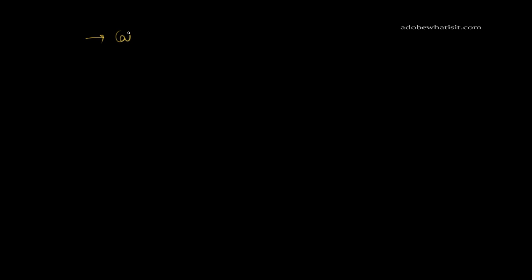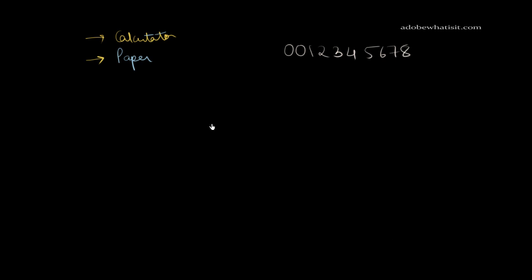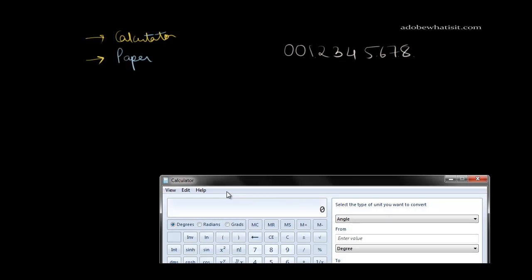Before I start with this trick, get a calculator out. Get a calculator and a paper — that's about it. Now I want you to write your number on the paper; it should be 10 digits. Let me write an arbitrary number: 1, 2, 3, 4, 5, 6, 7, 8, 9, 10 — this is a 10 digit number. Let me get my calculator out and show you the trick first.